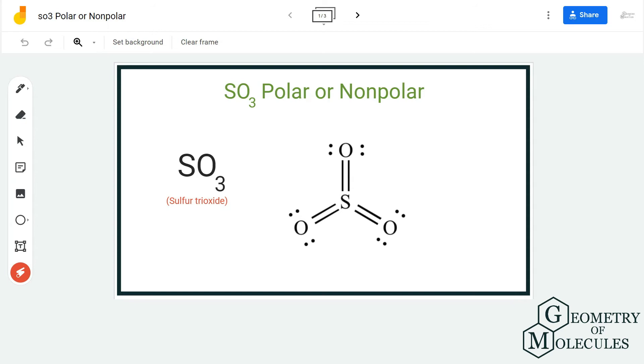Hi guys, welcome back to our channel. In today's video we are going to help you determine the polarity for the SO3 molecule. It is a chemical formula for sulfur dioxide and is made up of one sulfur atom and three oxygen atoms.